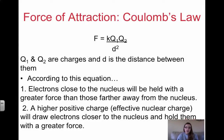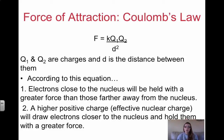Before we talk about periodic trends and explaining periodic trends, we have to look at Coulomb's Law. Coulombic attraction is the attraction between the protons within the nucleus and the electrons that are outside the nucleus within the atom. This attraction occurs because protons are positive and electrons are negative. Coulomb's Law describes this attraction, and this is the formula for Coulomb's Law.